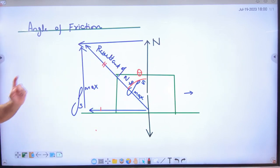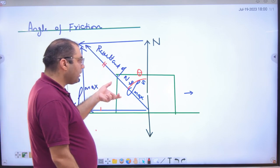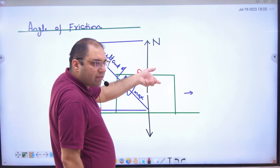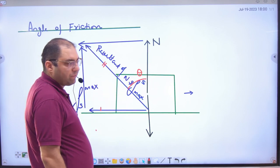This angle of friction - the resultant is at how much angle with normal? That angle is the angle of friction. What is this?